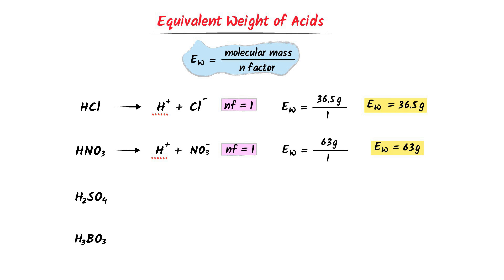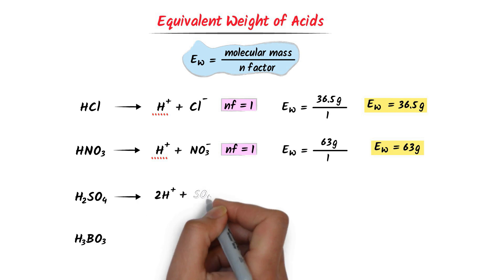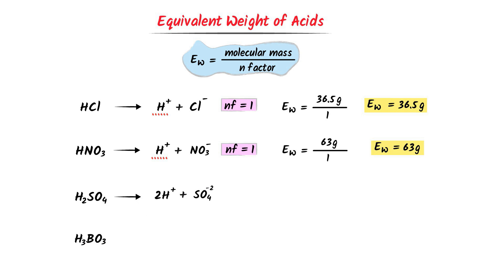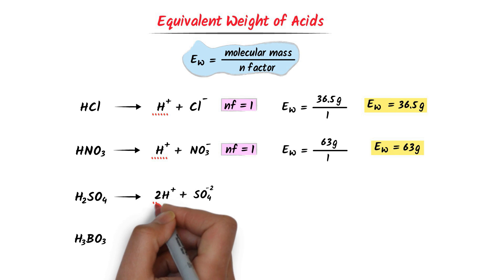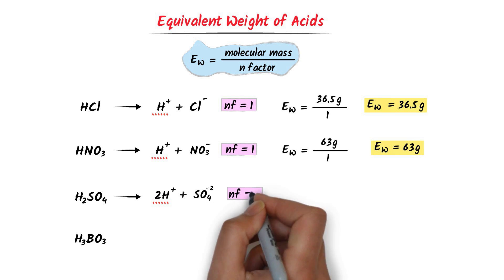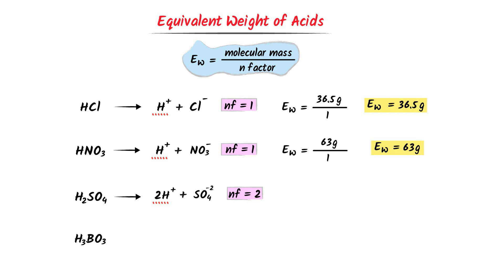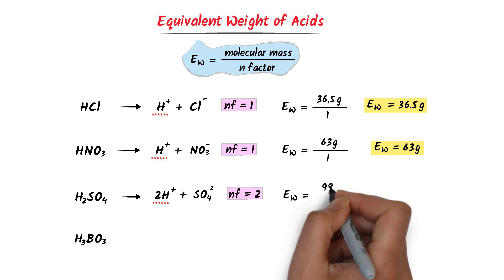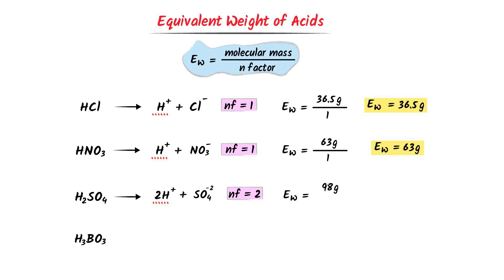In case of sulfuric acid, it dissociates to 2 hydrogen ions plus 1 sulfate ion. There are 2 hydrogen ions, so the N factor of H2SO4 is 2. Its equivalent weight is equal to its molecular weight upon N factor. The molecular weight of H2SO4 is 98 gram and its N factor is 2. After calculation, I get 49 gram. So the equivalent weight of sulfuric acid is 49 gram.